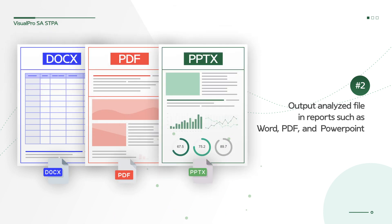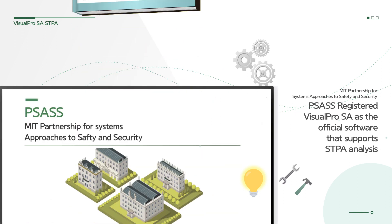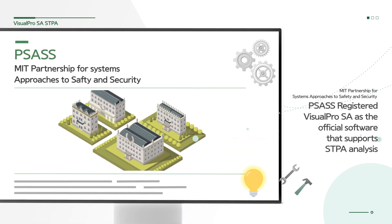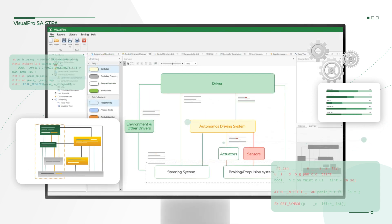Second, it allows users to print STPA standard reports. It is also able to output STPA data analyzed by users in report formats such as Word, PDF, and PowerPoint. Through these features, VisualPro SA was registered in the MIT Partnership for Systems Approaches to Safety and Security as the official software supporting STPA analysis.